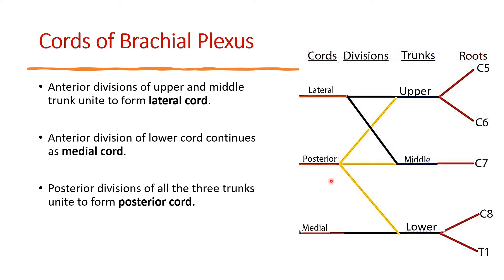When we look at the body in anatomical position, the upper part of the neck is continuous with the lateral side of the upper limb. Therefore, the lateral cord is contributed by the upper 2 trunks — anterior divisions join to form the lateral cord. The lower part of the neck is in line with the medial side of the upper limb, so the medial cord is formed by the anterior division of the lower trunk. Both lateral and medial cords are formed only by anterior divisions, while the posterior cord is formed by posterior divisions of all 3 trunks.